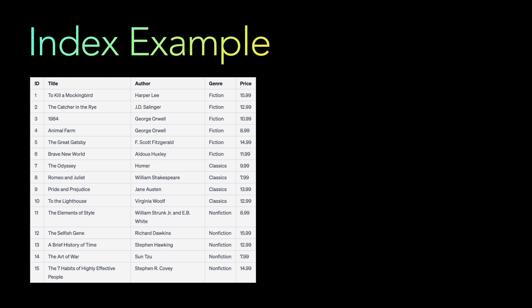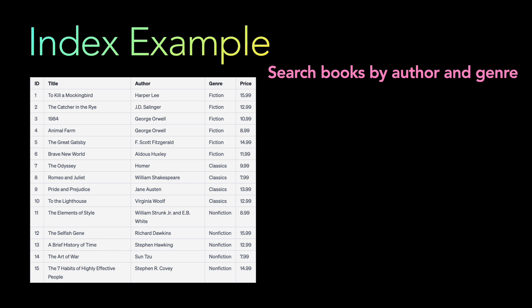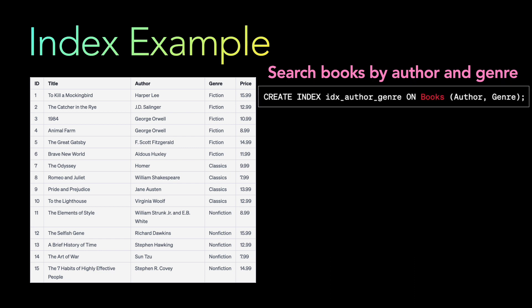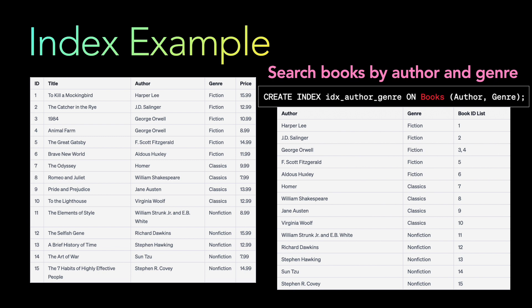Now let's look at searching books by both author and genre — two columns. You can create a composite index on books using author and genre together. This associates each author-and-genre combination with a list of matching book IDs. For example, George Orwell and Fiction maps to book IDs 3 and 4 — '1984' and 'Animal Farm' — since both are authored by George Orwell with genre Fiction.